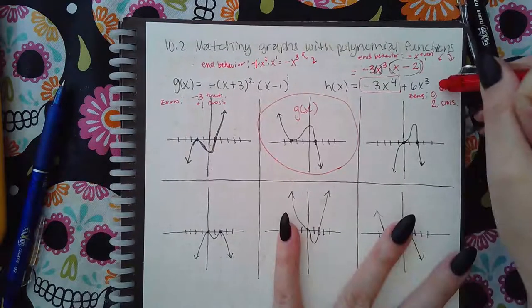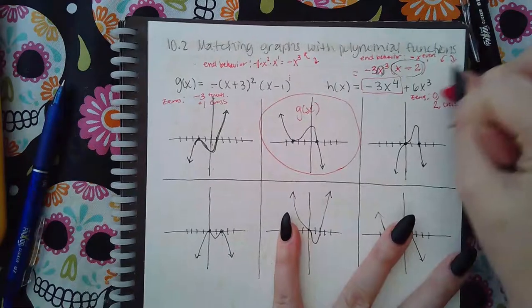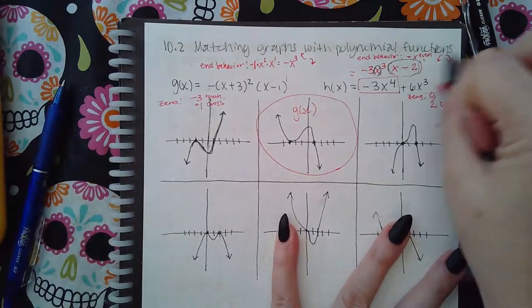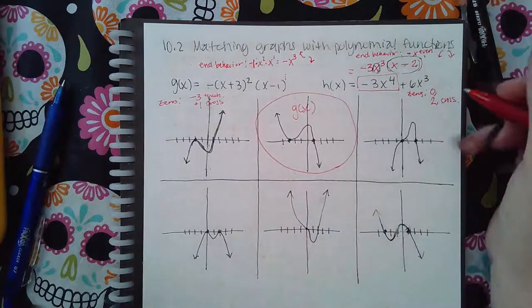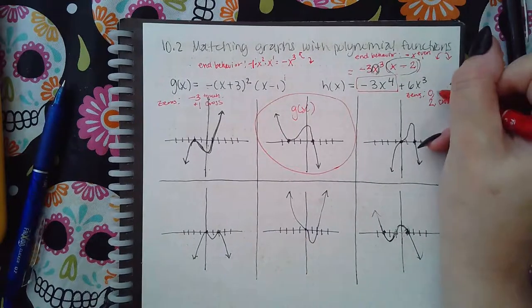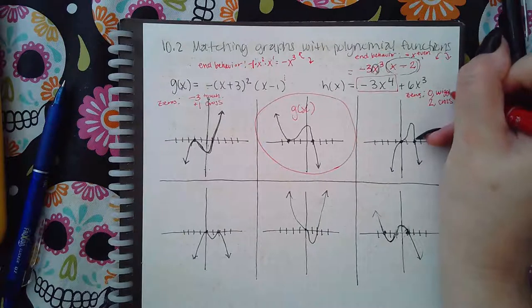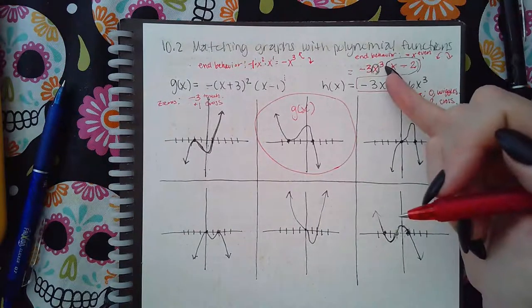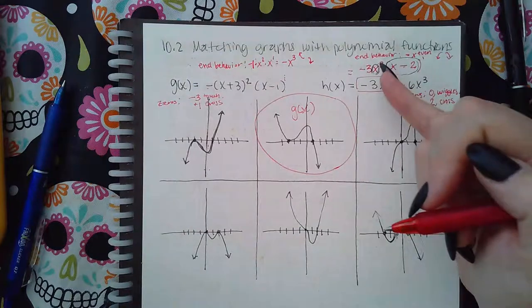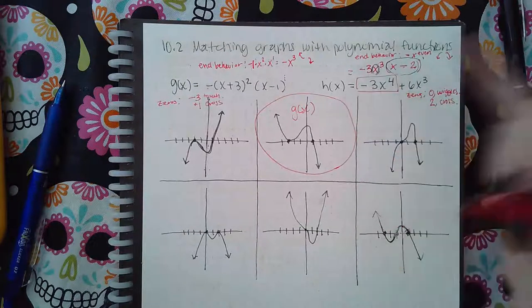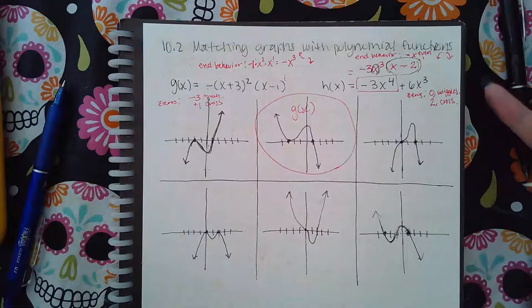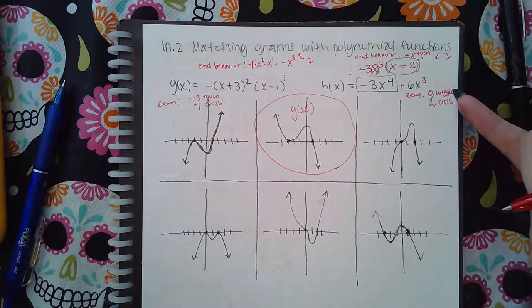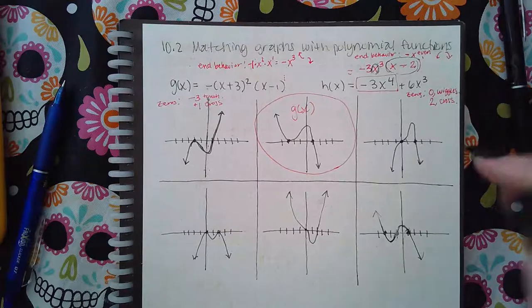This one doesn't actually cross. When the multiplicity is odd, bigger than one, it doesn't cross. What it does is it wiggles. So if the exponent is one, it will cross. But if the exponent is three, or five, or seven, or any other odd number besides one, then it wiggles through. What does that mean, it wiggles through? It does this.